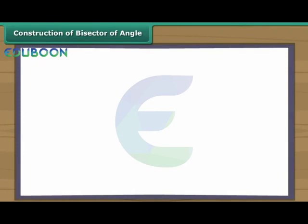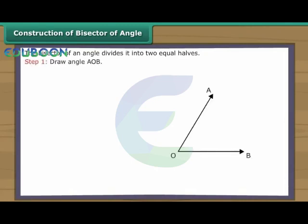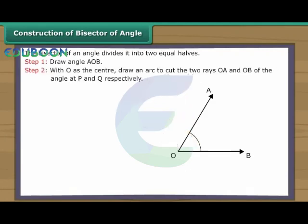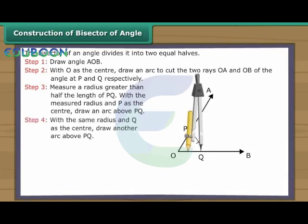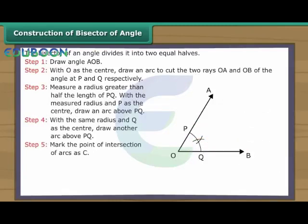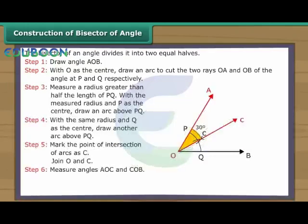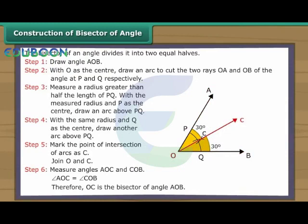Construction of bisector of angle. The bisector of an angle divides it into two equal halves. Let us learn to construct an angle bisector. Draw angle AOB. With O as the centre, draw an arc to cut the two rays OA and OB at P and Q respectively. Measure a radius greater than half the length of PQ. With P as the centre, draw an arc above PQ. With the same radius and Q as the centre, draw another arc. Mark the point of intersection of arcs as C. Join O and C. Angle AOC equals angle COB, therefore OC is the bisector of angle AOB.